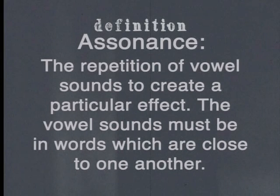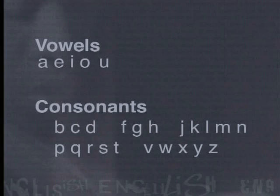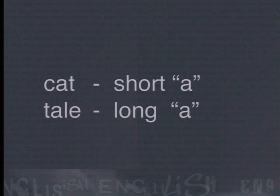Now let's move on to our next sound device: assonance. Assonance is the opposite of alliteration — it is the repetition of a vowel sound to create a particular effect. The vowel sound must be in words which are close to one another. Remember that vowels are the letters A, E, I, O and U. Assonance occurs when either short or long vowel sounds are repeated. Short vowel sounds are those such as the short A sound in 'cat'. Long vowel sounds are those such as the long A in 'tail'. It is important to hear the difference as this affects the pace of the writing.